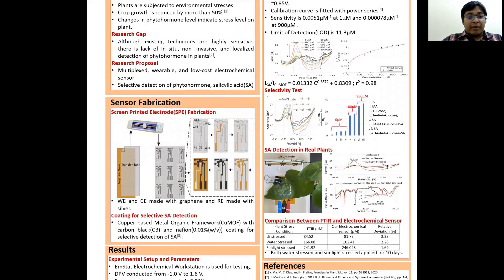We fabricate the electrochemical sensor on a flexible polymer sheet. At first, on top of the polymer sheet, we attached the transfer tape. Then the transfer tape attached polymer sheet is inserted to the prism cut, which is a craft cutter machine, and the design is transferred.